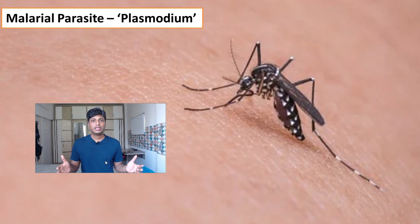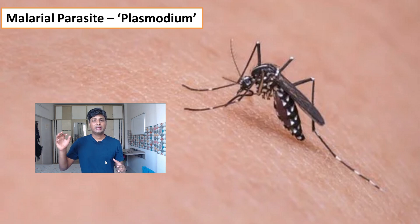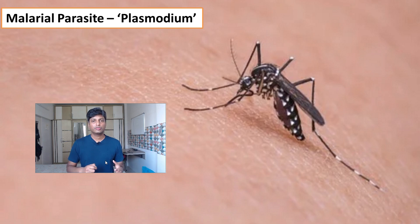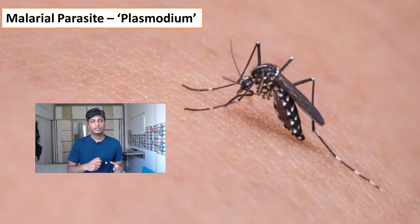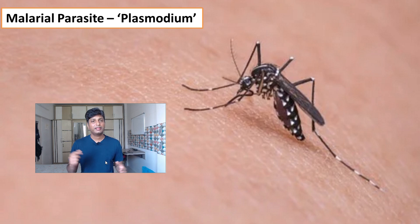Another common example of a parasite is the malarial parasite known as plasmodium, which is a type of protozoan. It is present inside the body of the female mosquito known as female Anopheles, and via this mosquito plasmodium can enter the human host, multiply inside, and form advanced stages. Plasmodium gets shelter and nourishment from humans, while humans get the dangerous disease called malaria.